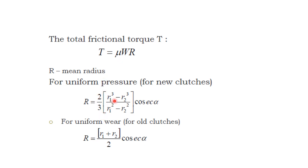For uniform pressure (for new clutches), R equals two-thirds times (R₁³ minus R₂³) divided by (R₁² minus R₂²) multiplied by cosec alpha.